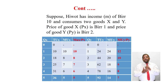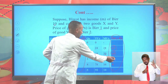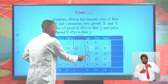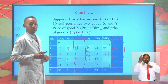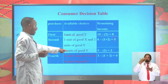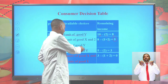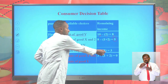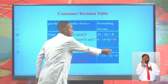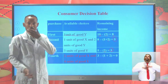In the next purchase, remaining MUx/Px are 8, 7, 6, 5 and remaining MUy/Py are 9, 8, 7. The largest value is 9, indicating she should buy 3 units of commodity Y. The price of Y is 2 Birr, costing 2 Birr and leaving 3 Birr. She cannot yet maximize satisfaction with 3 Birr remaining, so she proceeds to the next purchase.